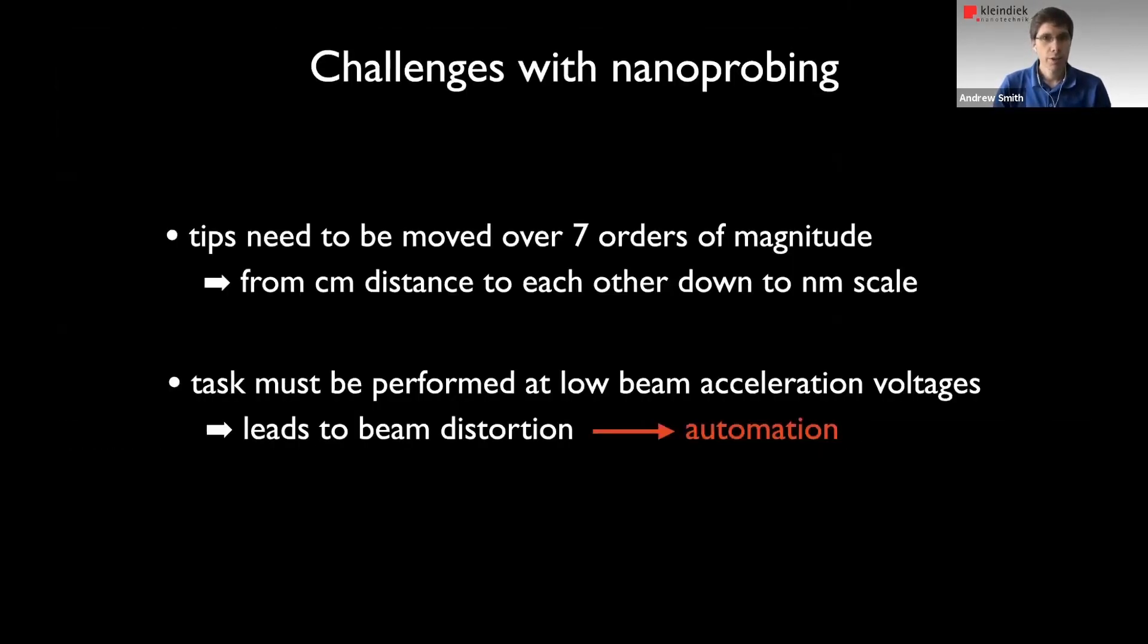Another challenge we have is we have to bring our probe tips, which have some nanometers of tip radius, from centimeters of distance down to nanometers close to each other. And that's seven orders of magnitude. And as we just discussed, we have to do this at very low acceleration voltages. And since moving the probes around at these low voltages causes the beam to distort and shift, the only solution is to do this with some form of automation.